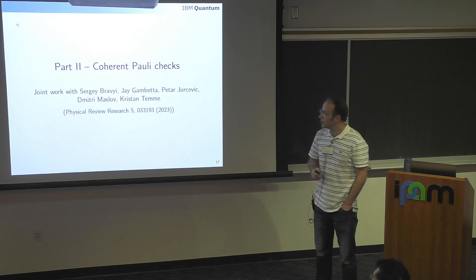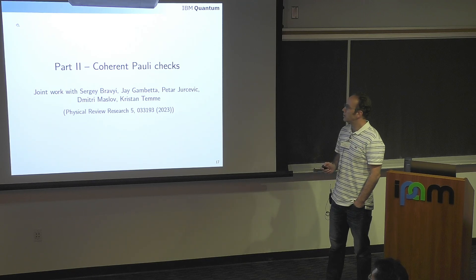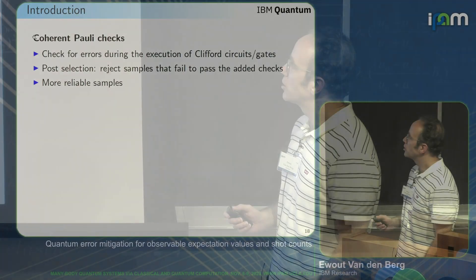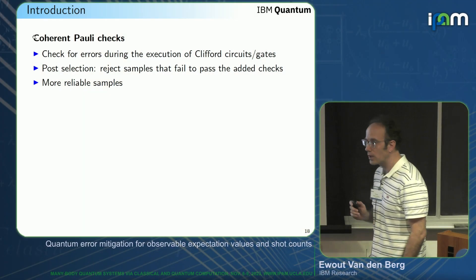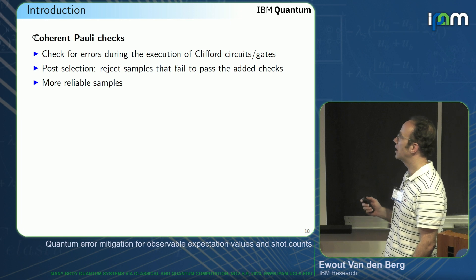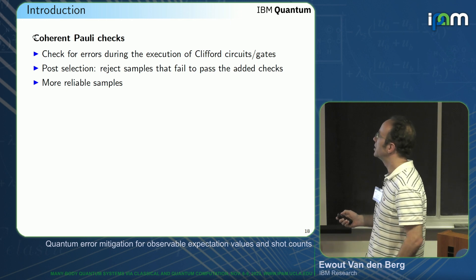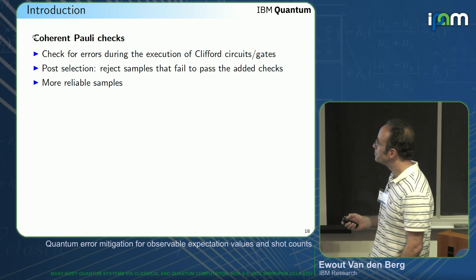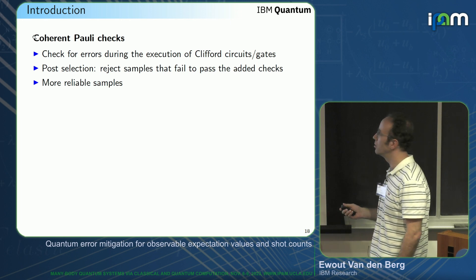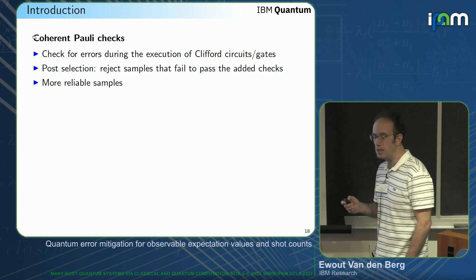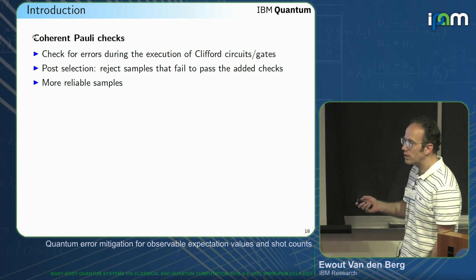Let me go to the second part of the talk: coherent Pauli checks. This is joint work with Sergey Bravyi, Jacob Betta, Petar Djurcevic, Dmitry Maslov, and Kristin Temme. Coherent Pauli checks serve to check for errors that happen during the execution of some Clifford circuit — again a Clifford circuit, but this time it can be a much larger circuit. It works by post-selection: you reject all shots that fail to pass the checks, giving you more reliable samples.